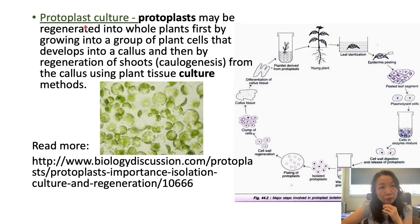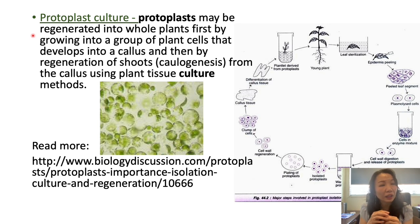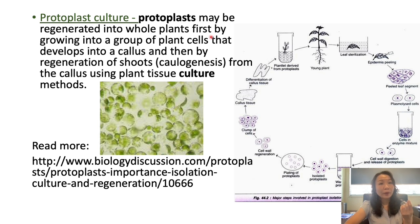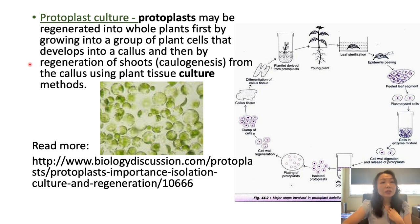Next, we have protoplast culture. Protoplast culture means that the cells are naked — the plant cell wall has been removed. There are many mechanisms that can be used to remove the cell wall of the plant. The protoplast culture can then be used to regenerate into a whole plant, possibly via indirect culture where cells first develop into callus and then only regenerate or recover into shoots or roots.